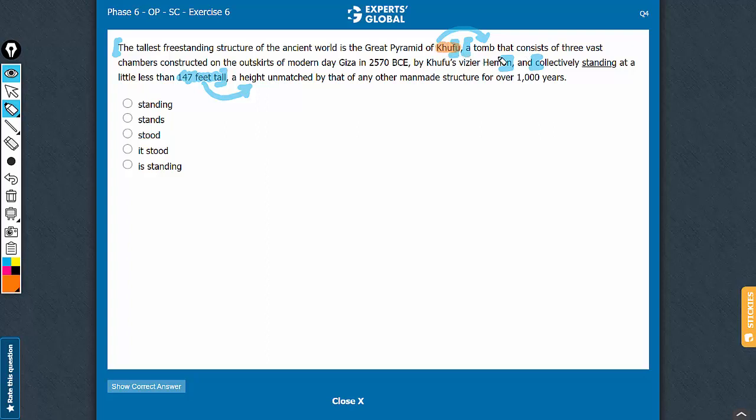To understand this better, let's flip the sentence. Here is a simplified, flipped version of the sentence. So, now you see, from here to here, this is a modifying phrase, which is supposed to modify Khufu. What do you think should come here?